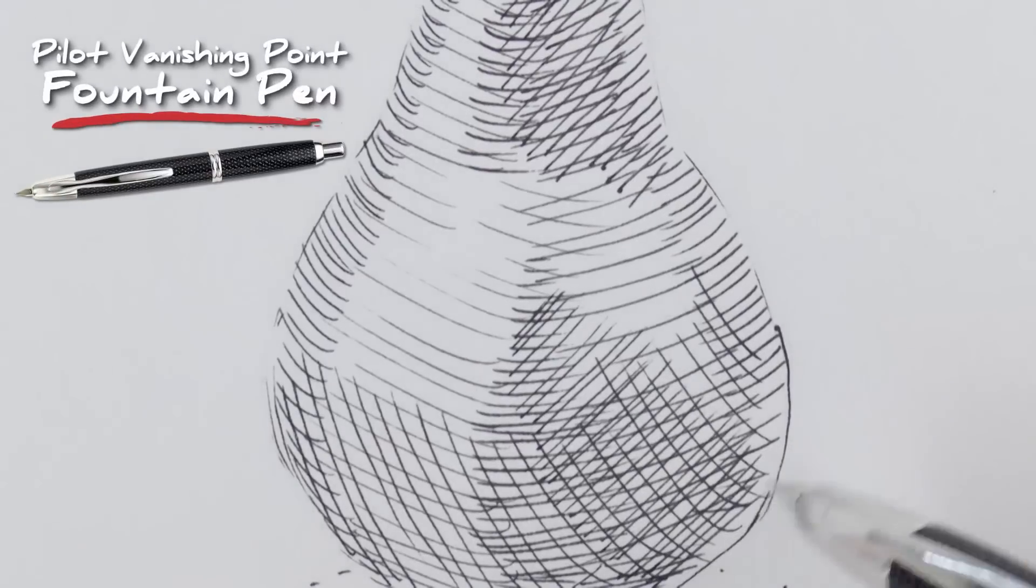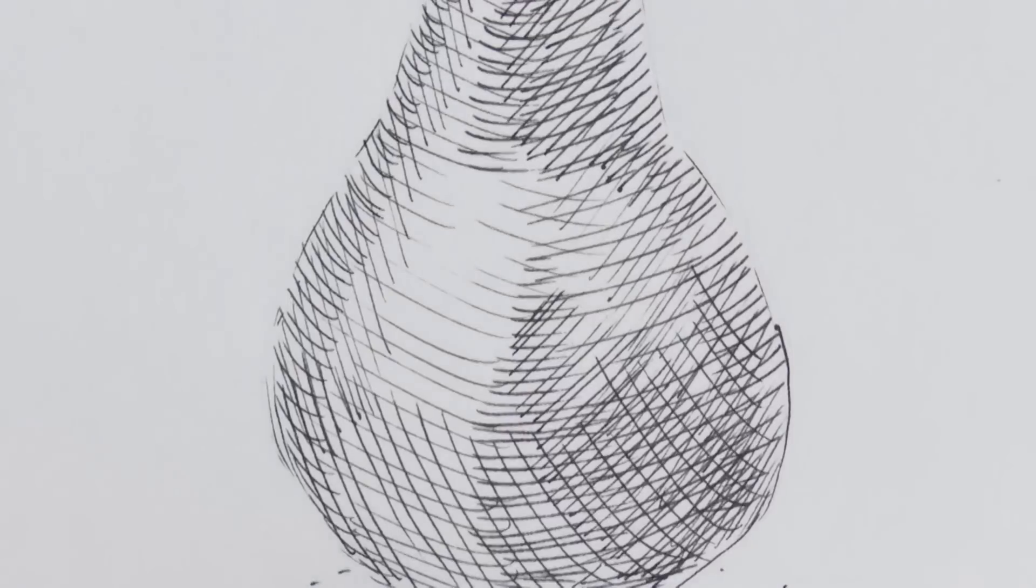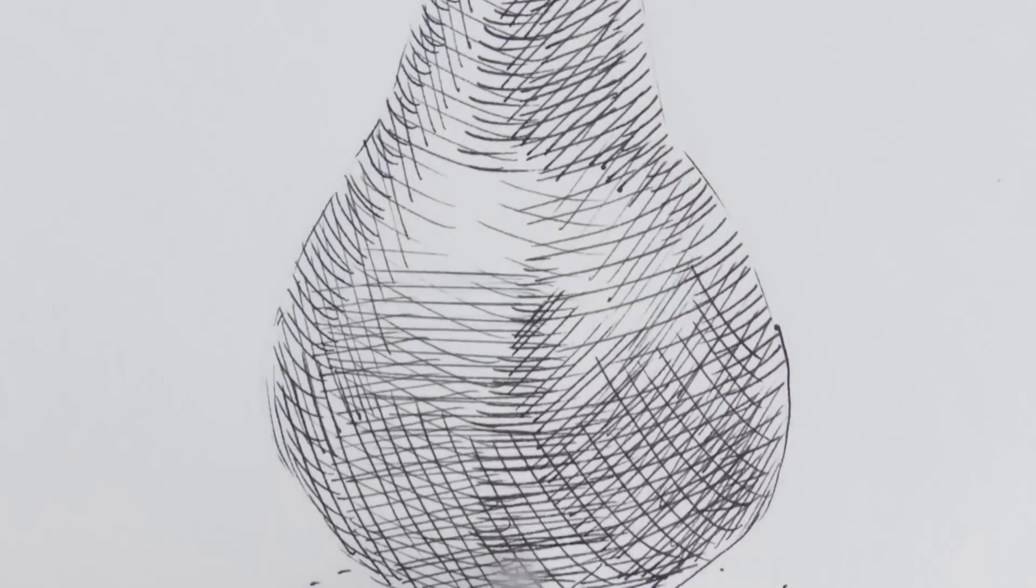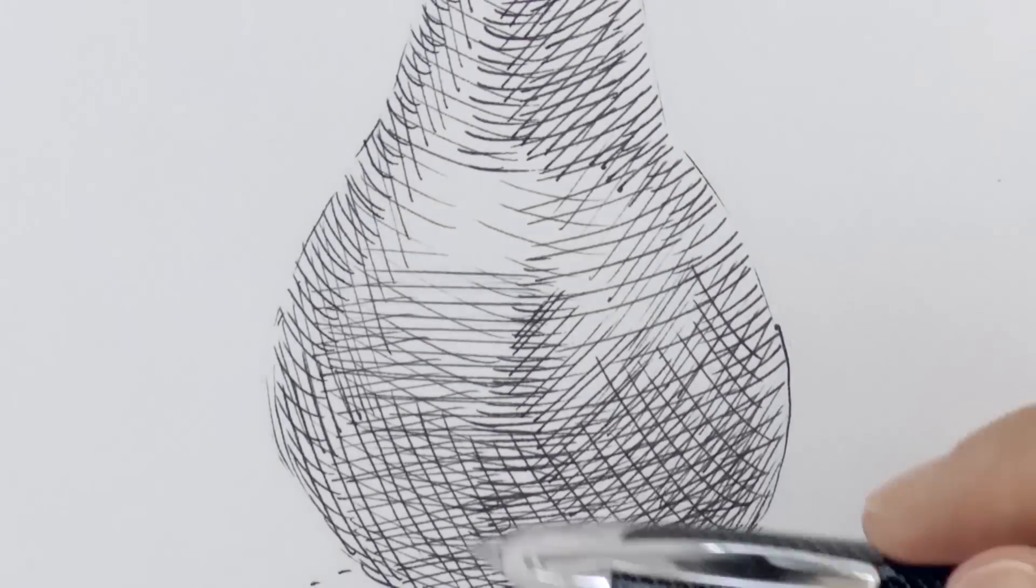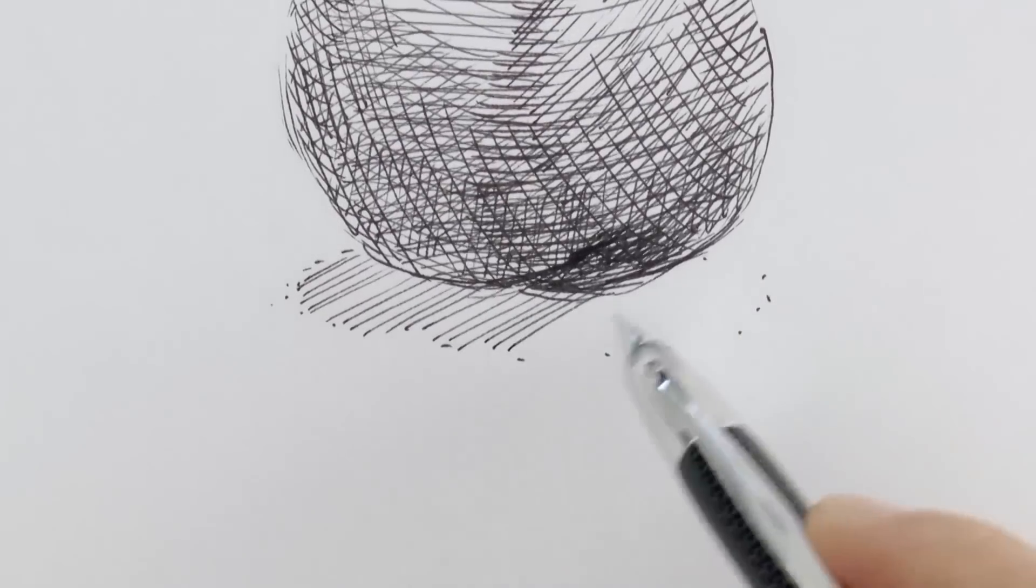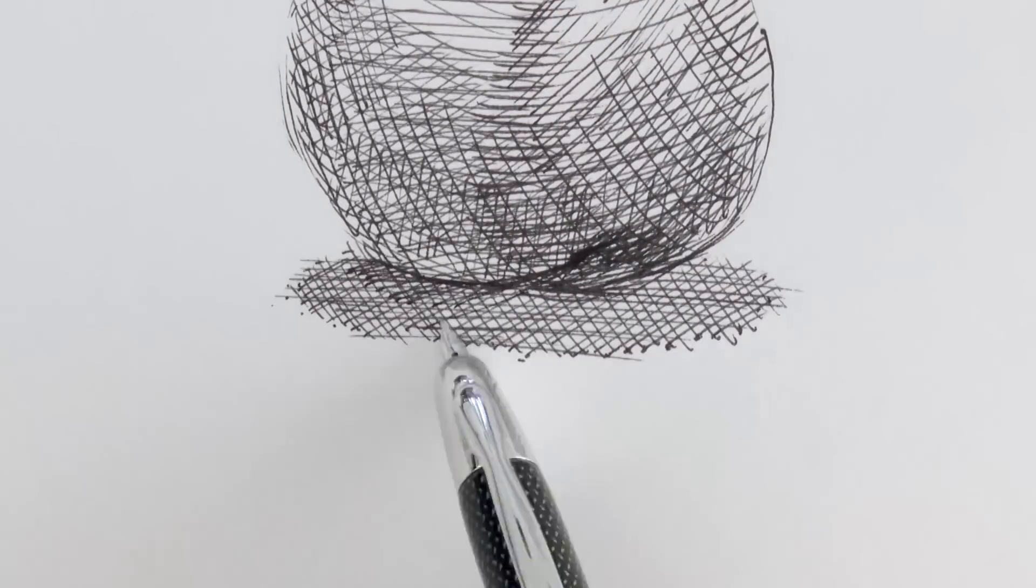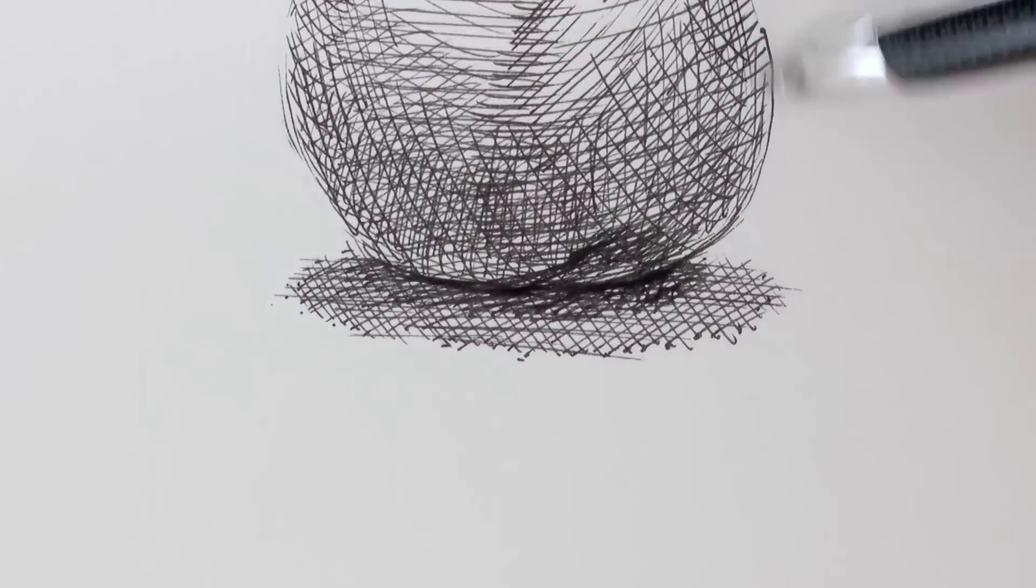I'm drawing with my gorgeous vanishing point fountain pen. I really love it! It glides on the paper like skating on ice or something like that! You can see the materials I am using in the description under the video. I do the shadow with straight lines because it is on a flat surface.